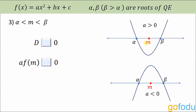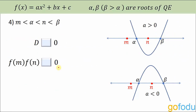Next question: we have a point m lying between both the roots alpha and beta. D is greater than zero. For a·f(m): f(m) is negative and a is positive, so their product is negative; in the other case, f(m) is positive but a is negative, so again the product is negative. Therefore, in both cases, a·f(m) is less than zero.